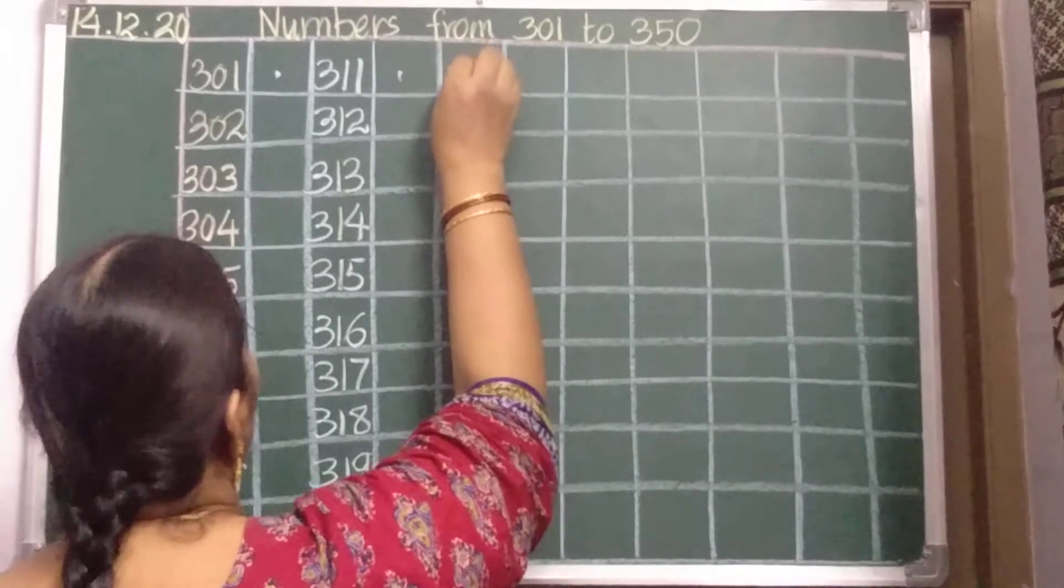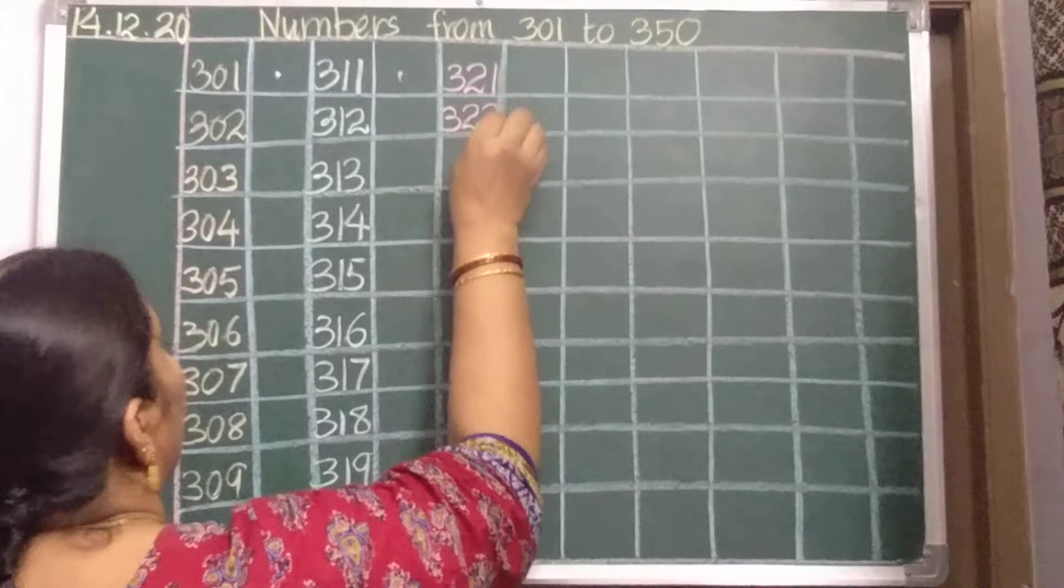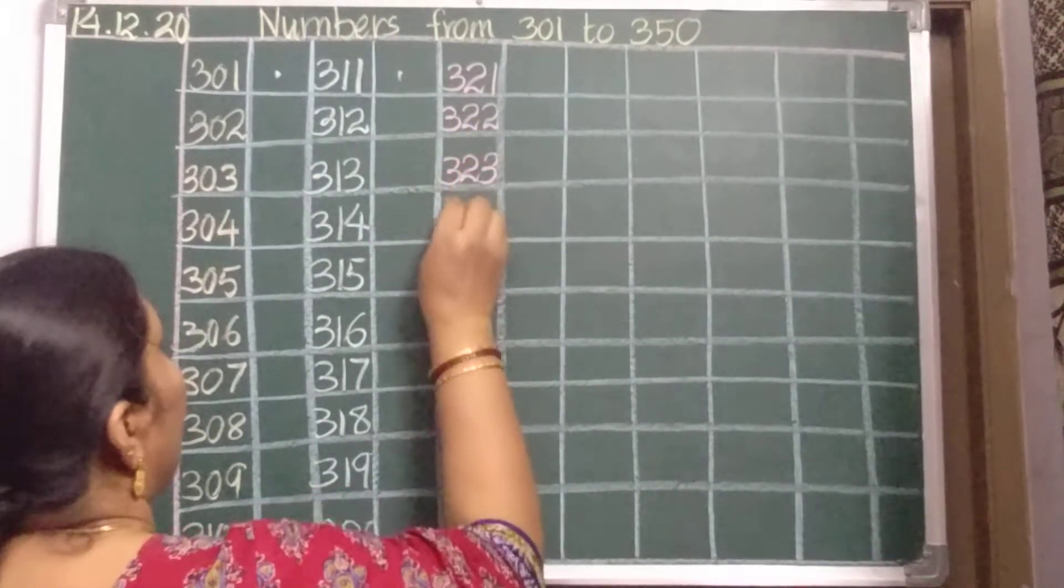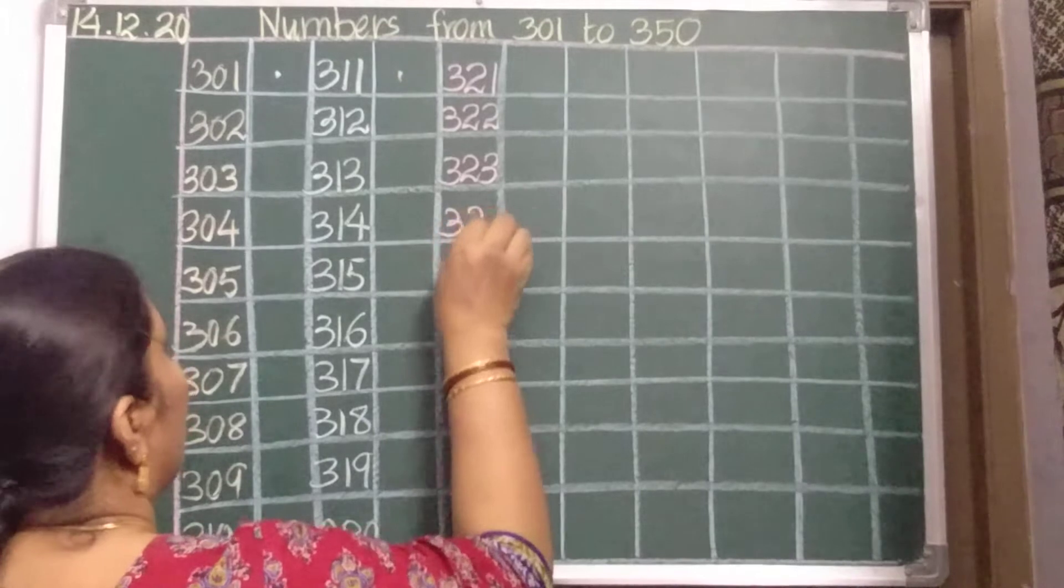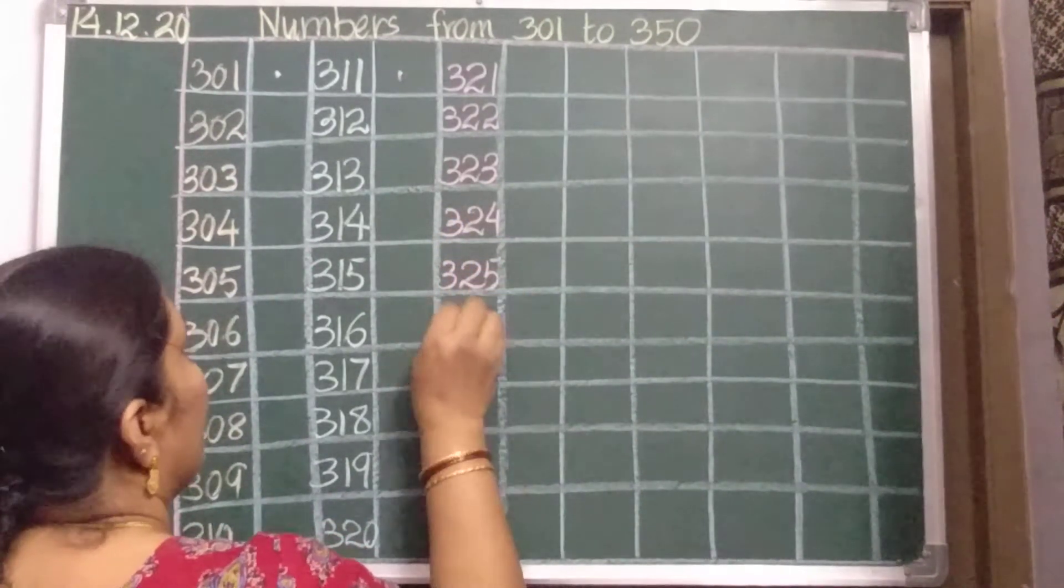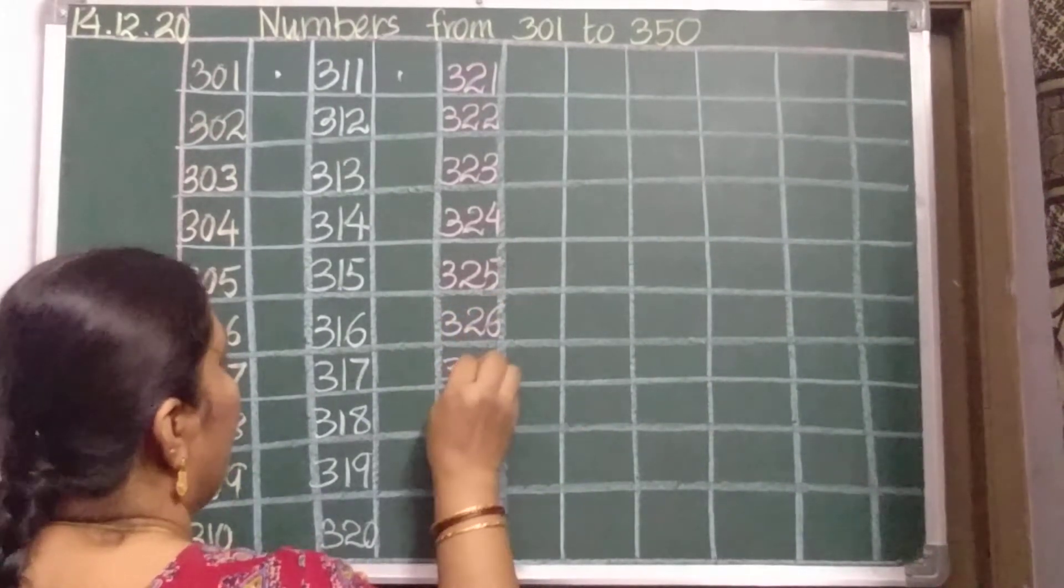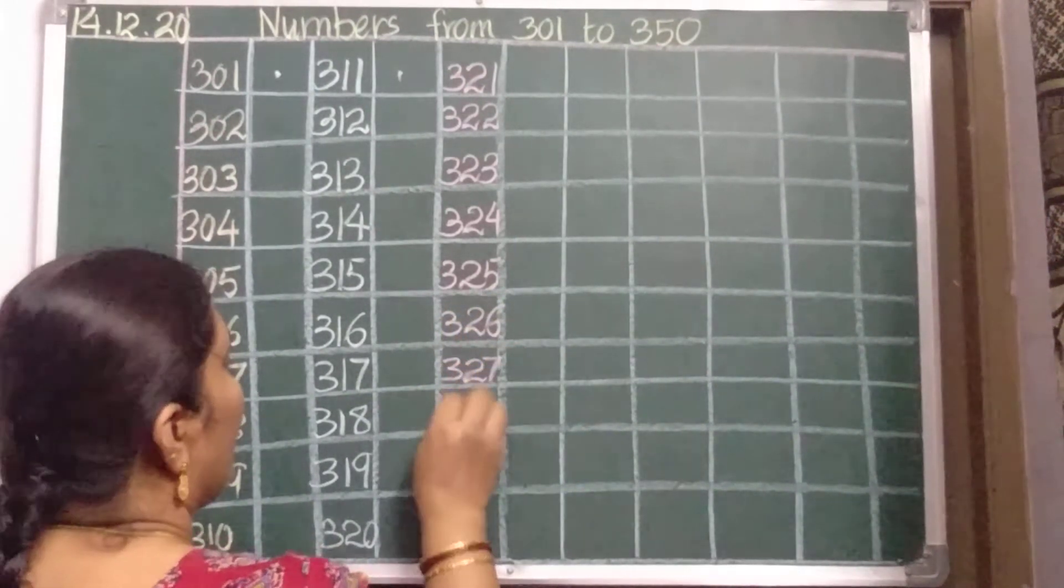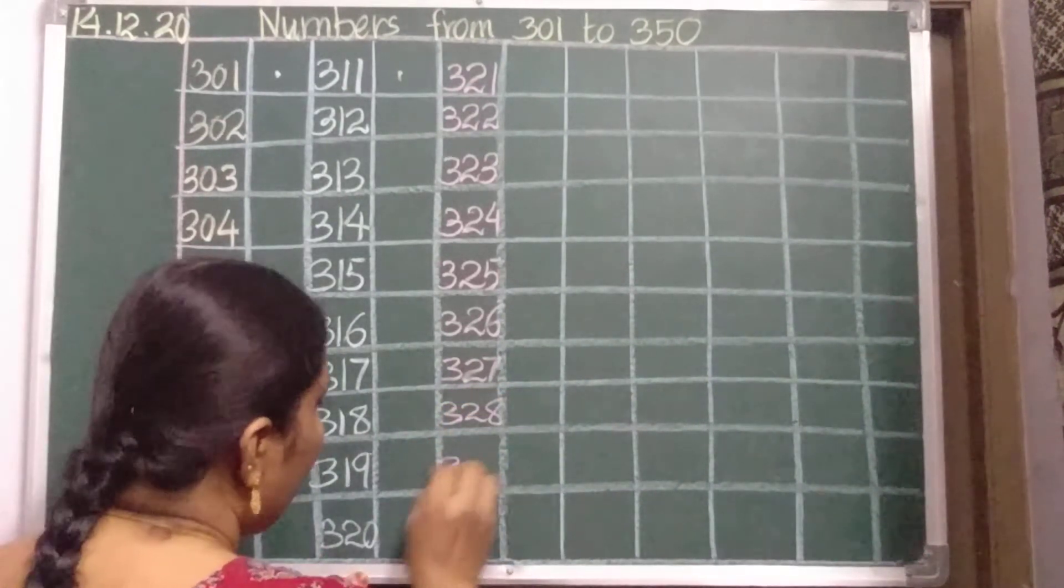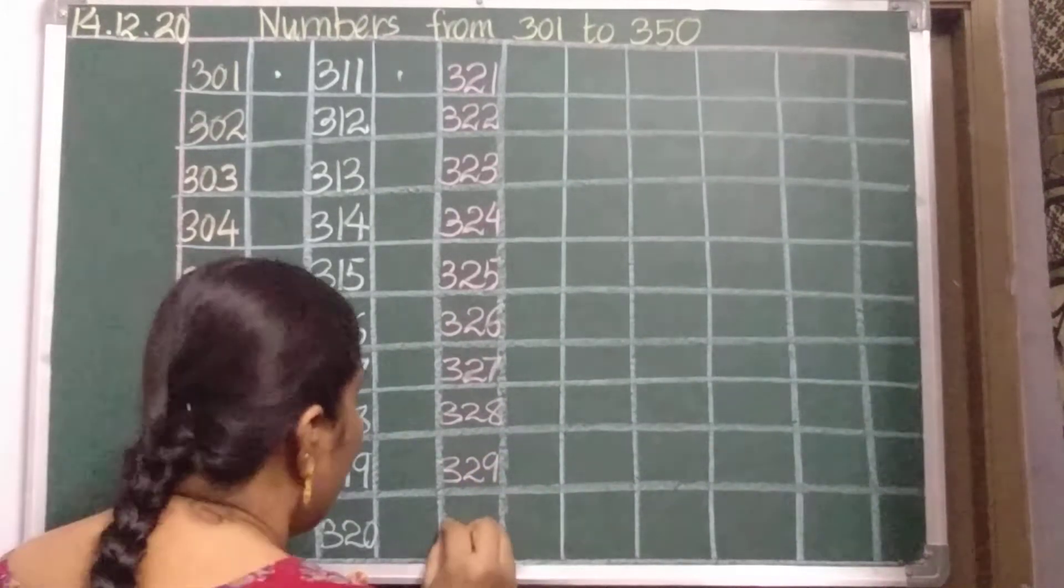Yes, so 321, 322, 323, 324, 325, 326, 327, 328, 329, and 29 after 30.